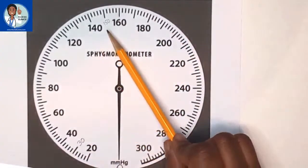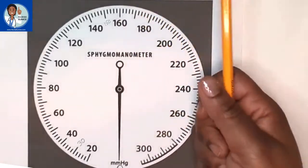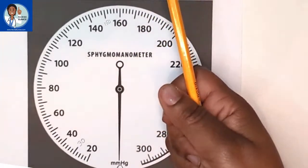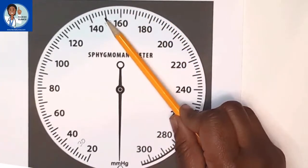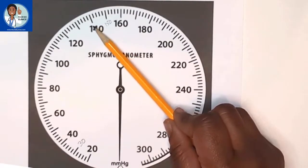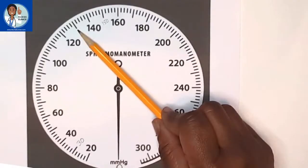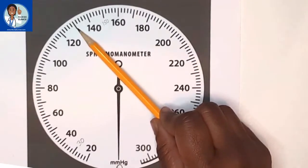So we're going to pump the cuff up to 150. And then we're going to gradually release the air valve. We're going to turn it counterclockwise, we're going to turn it back towards us, and the needle should drop about 2 millimeters of mercury per second. Where you hear the first thump is going to be called the systolic pressure.